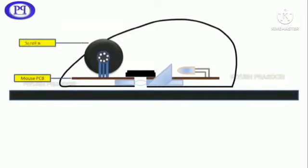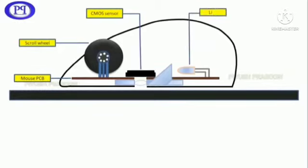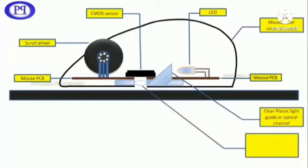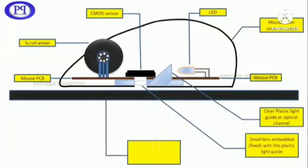So we will discuss a visual. As you can see, a mouse PCB, scroll wheel, CMOS sensor, LED light. It is the mouse chassis. After the chassis, you can see another PCB board. In front of that PCB board, you can see a clear plastic light guide or optical channel from which the light is going to pass. In front of it, we have a small lens embedded with the plastic light guide, and with that we have the mouse pad or any reliable surface for the mouse to use.